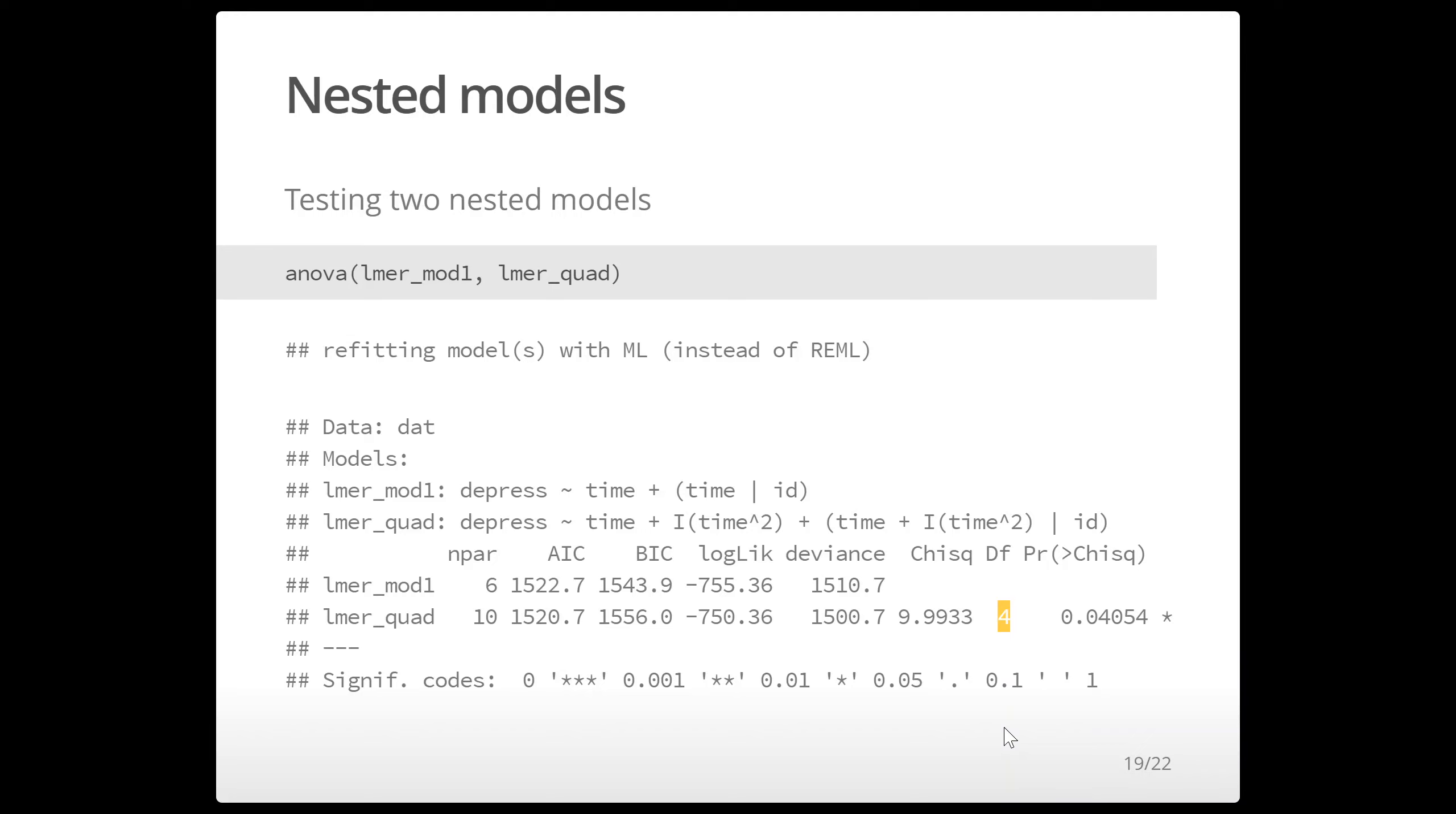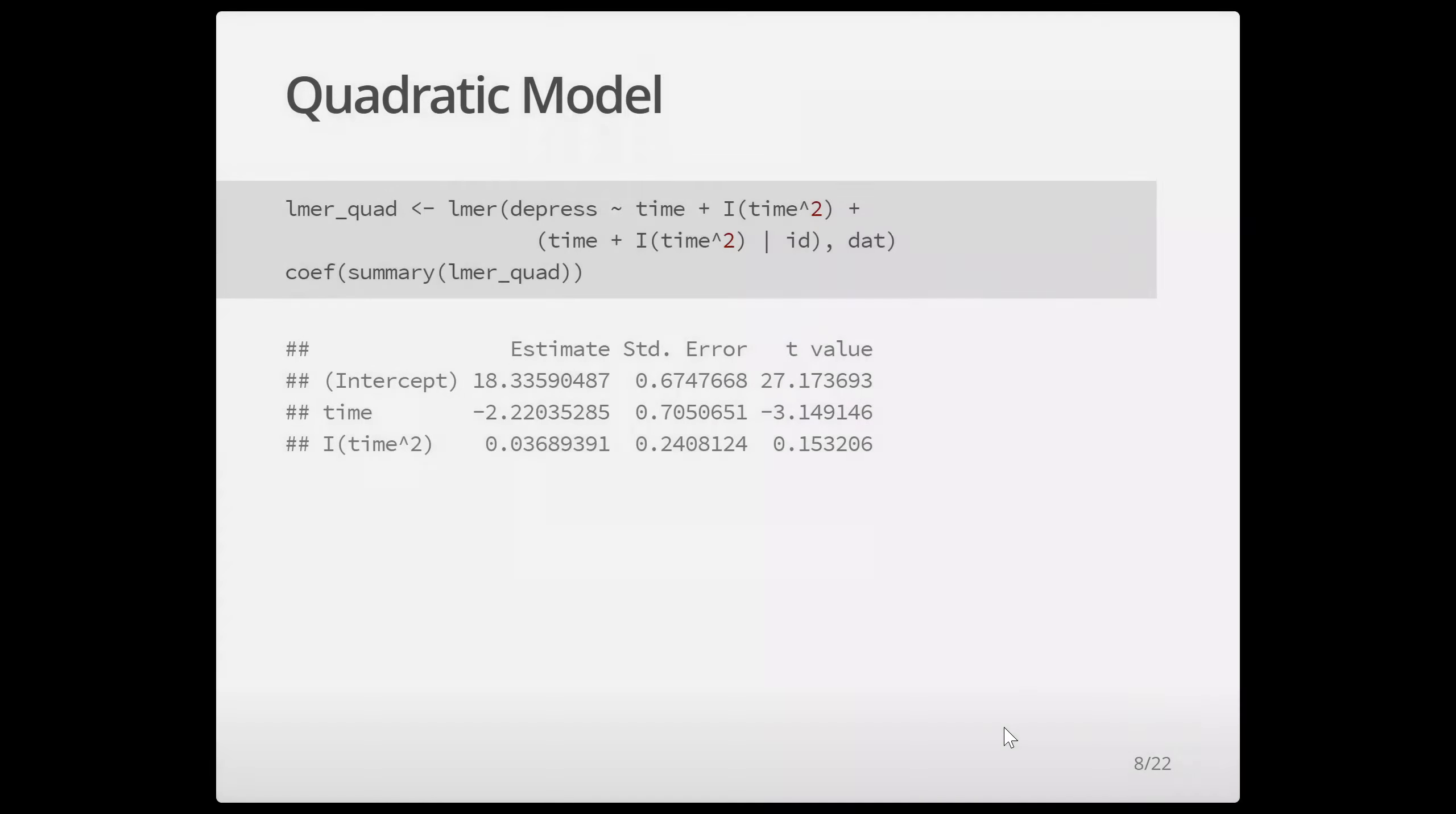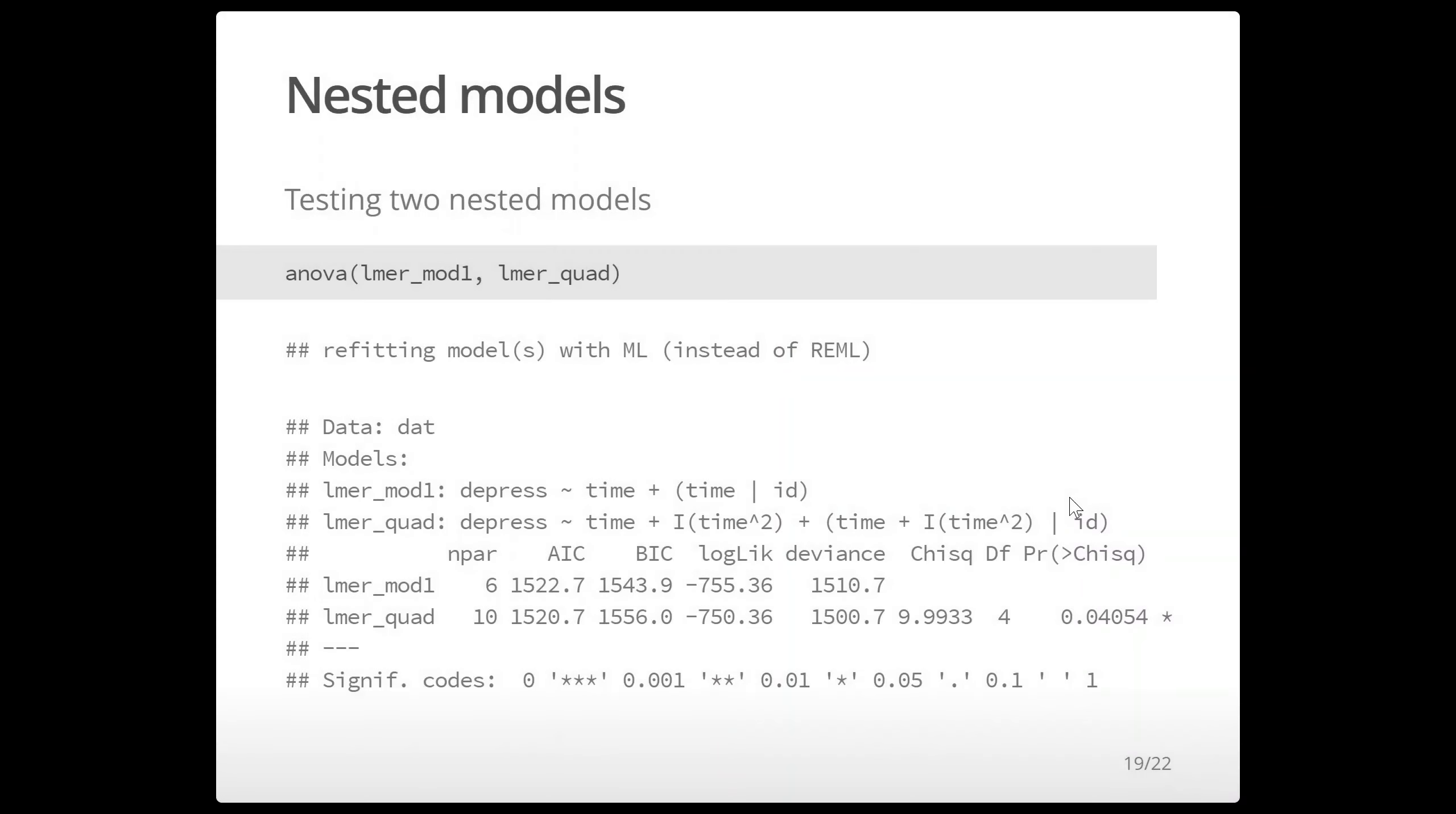And so I think the way I would interpret this result, let me try to go back really quick. So here you see the quadratic effect of time was not significant in this model, the t value is really really small, but the likelihood ratio test was.